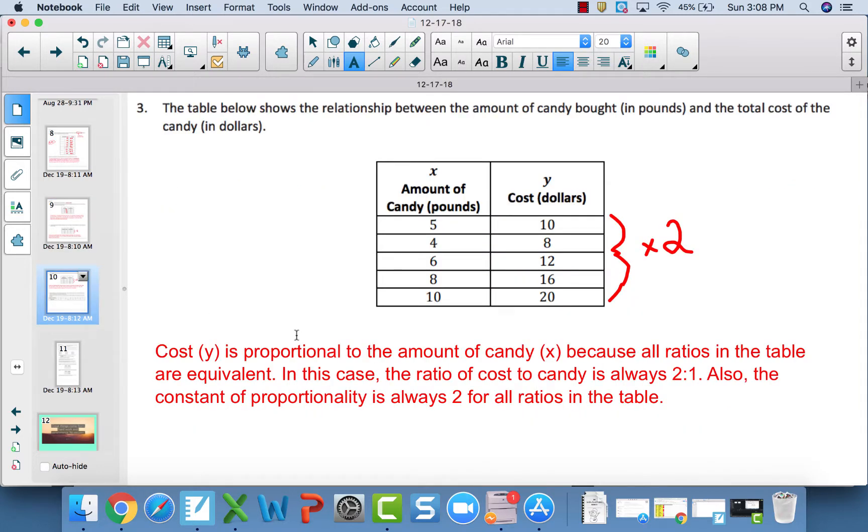Table 3, this one should have been pretty easy. This is for sure proportional because all ratios in the table are equivalent. In this case, the ratio is always cost to amount of candy is 2 to 1. The easiest way to do it is just to look at the constant of proportionality. And in this case, it is times 2 for every value of x to get to y every single time.